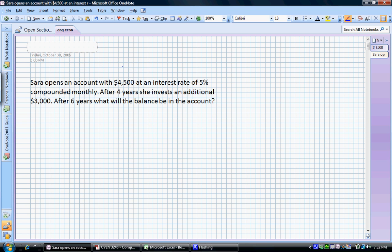Let's try a problem that's a little bit more difficult. Step number one, let's read the question. Sarah opens an account with $4,500 at an interest rate of 5% APR compounded monthly. After four years she invests an additional $3,000 in that account. The question asks, after six years what is the total balance going to be?